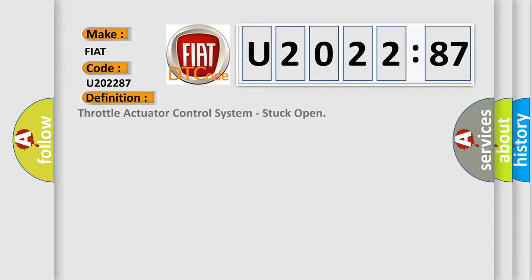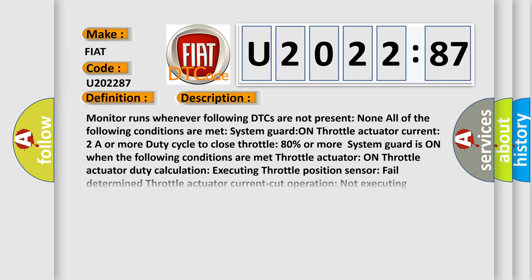The basic definition is throttle actuator control system stuck open. And now this is a short description of this DTC code.